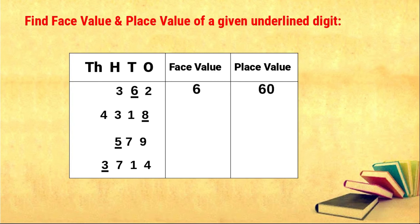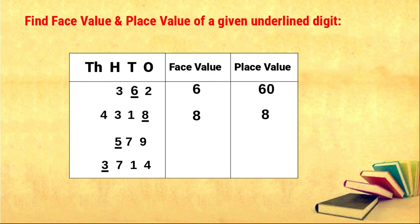Next, the given number is four thousand three hundred and eighteen, and the underlined digit is eight. Eight lies in the ones place, so the face value is eight and the place value is eight times one, that is eight. The next number is five hundred and seventy nine, and the underlined digit lies in the hundreds place. The face value is five, and the place value is five times one hundred, that is five hundred.